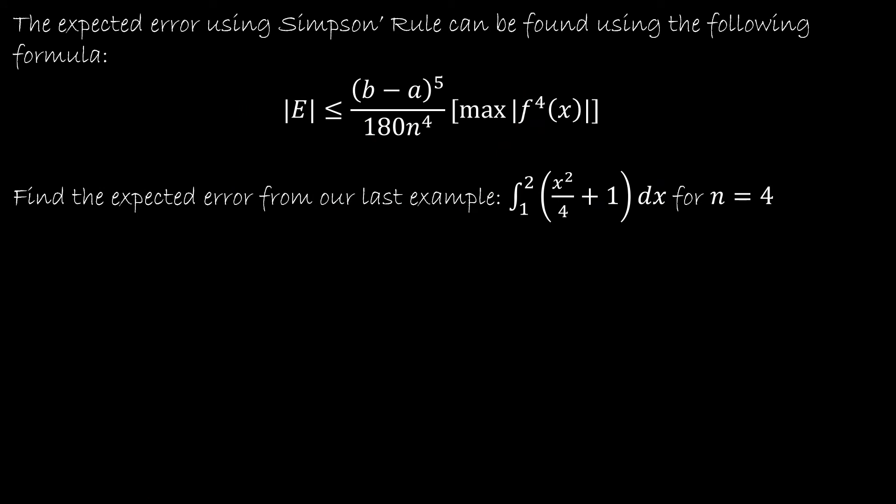Just as we did with the trapezoidal rule, we have a formula for helping us find the expected error using Simpson's rule. You'll notice that the equation is very similar. But what we're going to do is now we're taking the fourth derivative and we have n to the fourth and b minus a to the fifth.